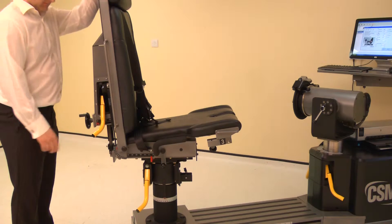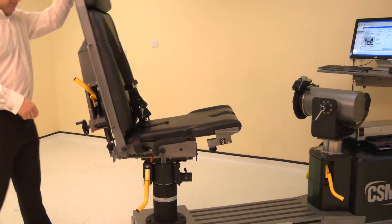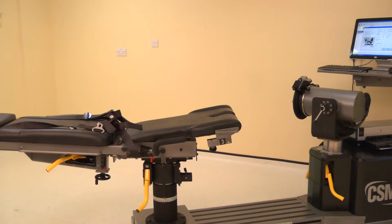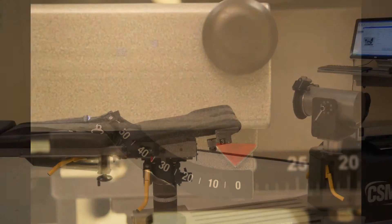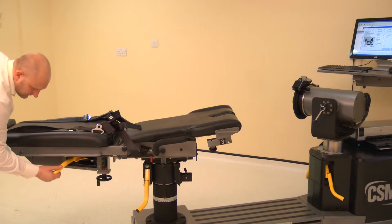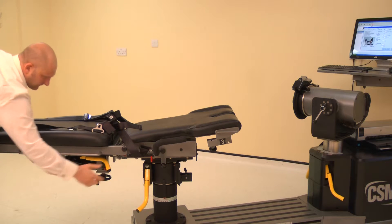To set the chair back angle, lift the locking handle and adjust the chair back. Adjust the chair back angle to 0 degrees. Lock by tightening the handle.